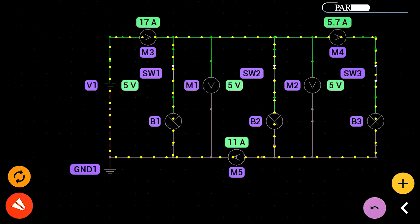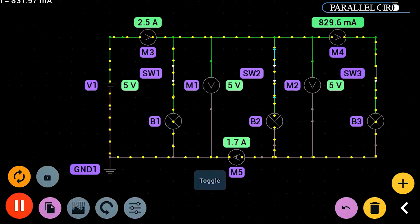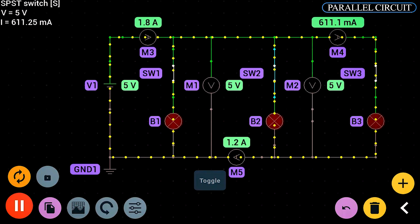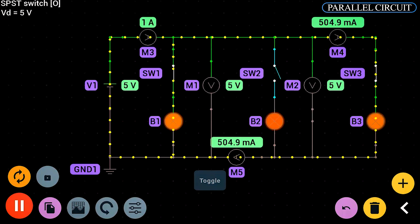In a parallel circuit, components are connected in multiple branches. Each path is independent, and electricity can freely flow through more than one at a time. If one bulb goes out, the others keep shining.